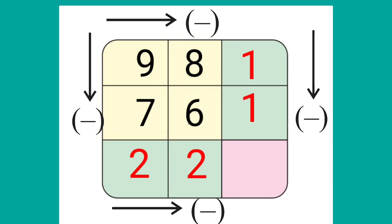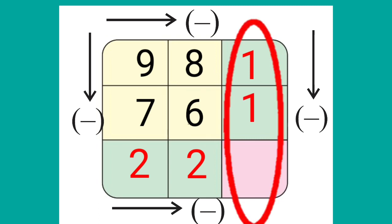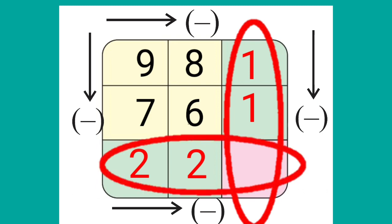At the right side, we have 1 minus 1. And at the bottom, we have 2 minus 2. In both cases, the answer is 0. We will write 0 in the common box.